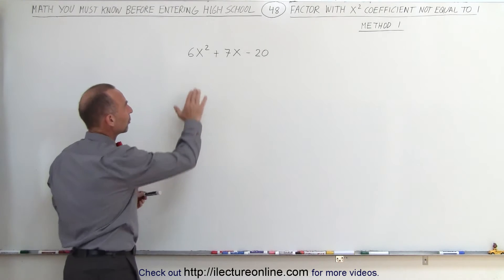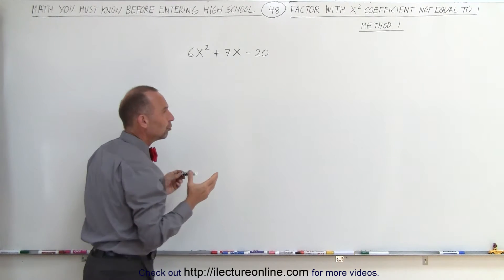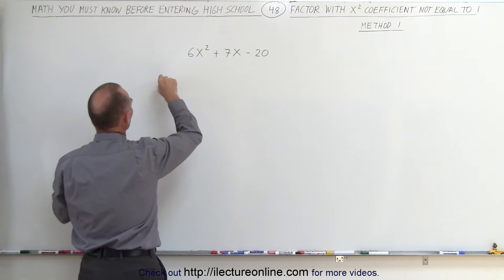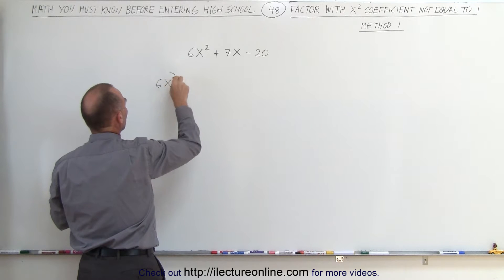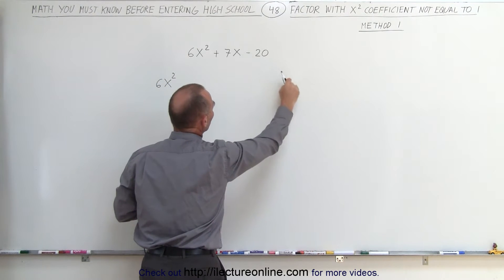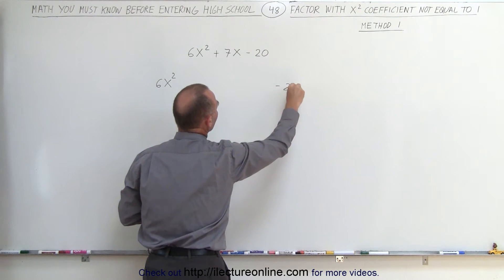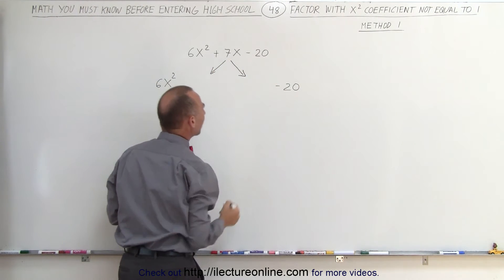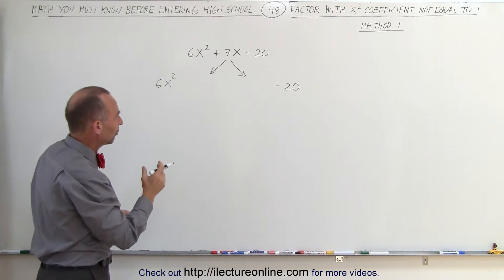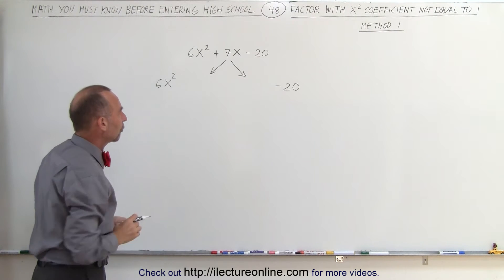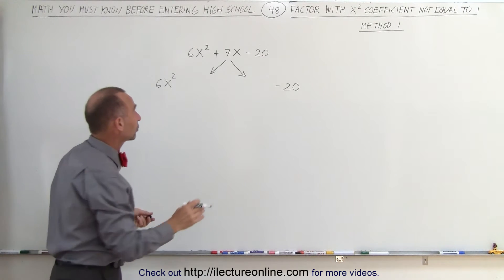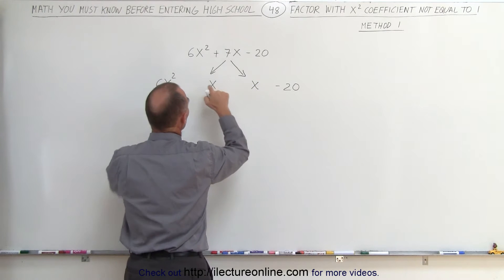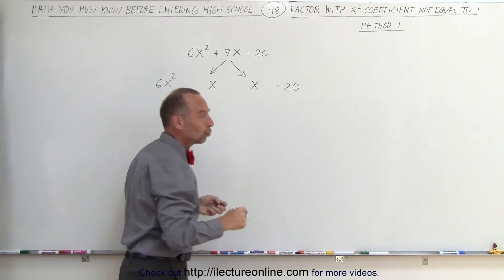What we're going to do is rewrite this trinomial and turn it into a polynomial with four terms. We take the 6x-squared and write it here, give it some more room in the middle, and take the minus 20 and write it over there. Then we take the middle term and write it as the sum of two middle terms — two terms with the variable x — but we don't know what those two numerical coefficients are yet.